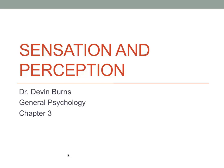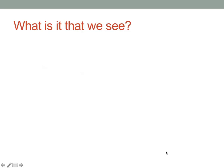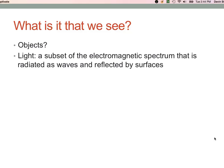The first example we'll talk about and spend the most time on is vision. So what is it that we see? Objects? People? Balls? Trees? No — actually, we see light. We see light, which is a subset of the electromagnetic spectrum that is radiated as waves and reflected by surfaces.